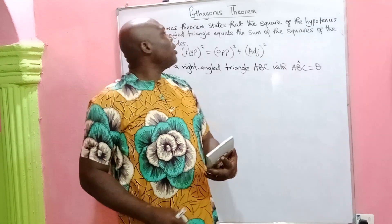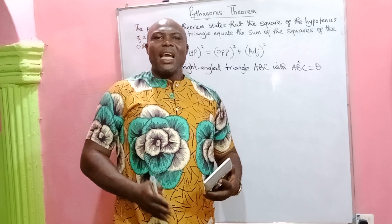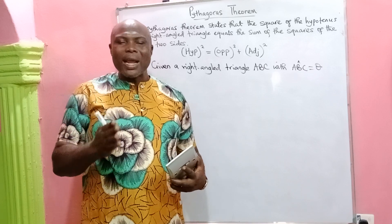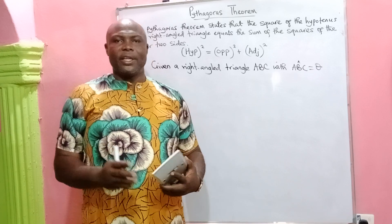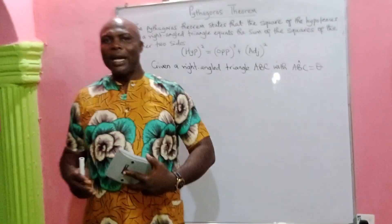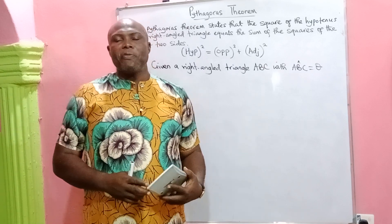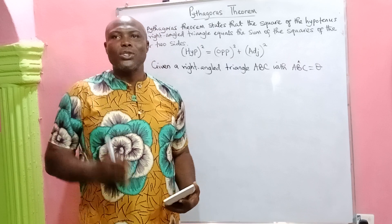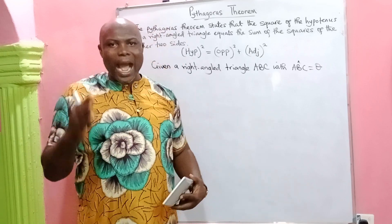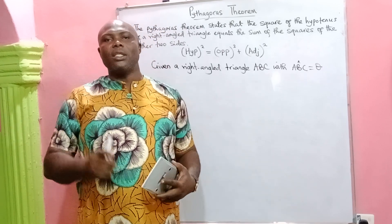The Pythagorean theorem is a theorem used in solving the sides of a right-angle triangle. For instance, if a right-angle triangle has two sides given and you're asked to find the third side, the simple way to do that is by use of the Pythagorean theorem. It simply states that the square of the hypotenuse of a right-angle triangle equals the sum of the squares of the other two sides.